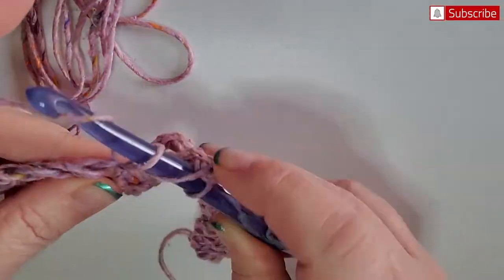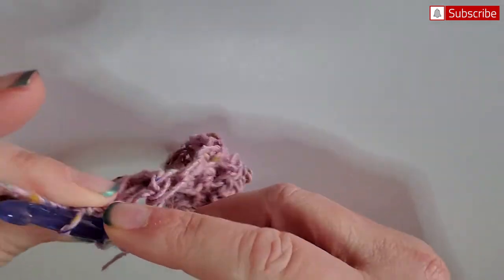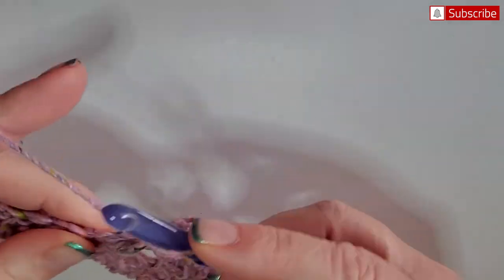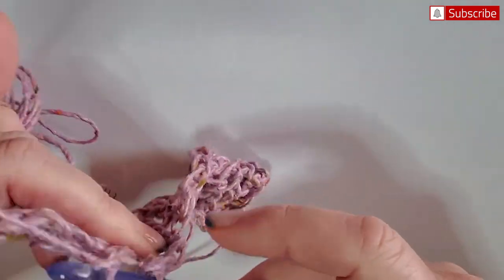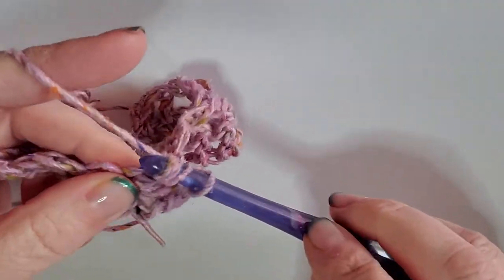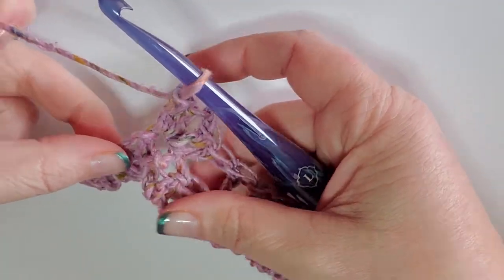We're going to do two double crochets, a single chain, and then two more double crochets all in the same stitch. Then we have another little shell, and so then we're going to skip two more.